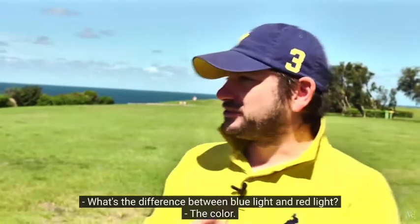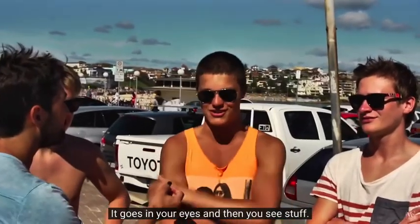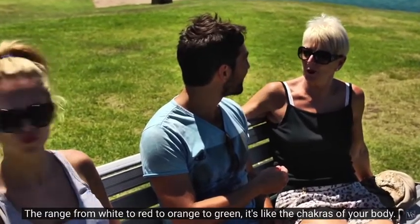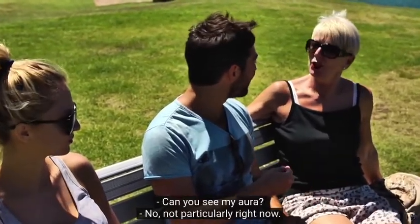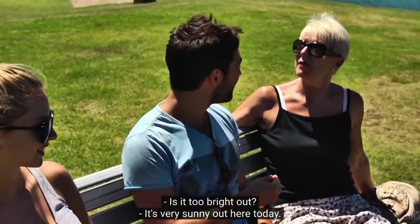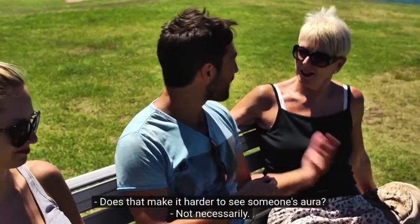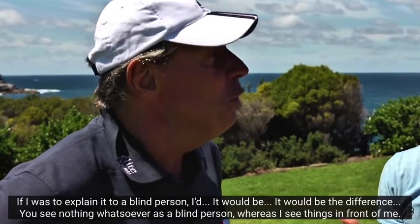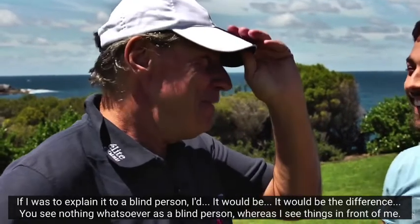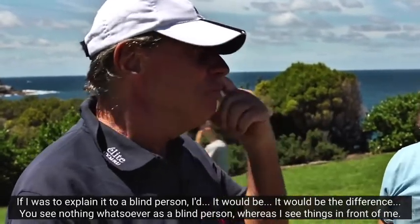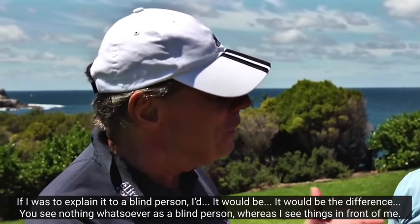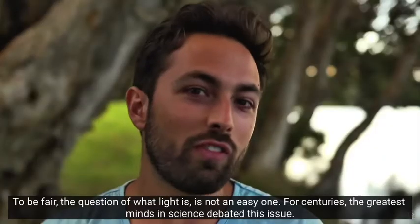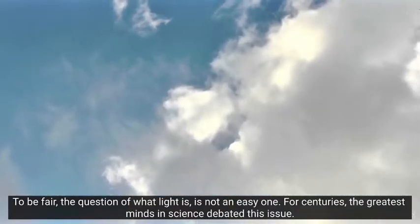What's the difference between blue light and red light? The colour. It goes in your eyes, and then you see stuff. They range from white to red to orange to green. It's like the chakras of your body. Can you see my aura? Not particularly right now. Is it too bright out? It's very sunny out here today. Does that make it harder to see someone's aura? Not necessarily. If I was to explain it to a blind person, it would be the difference. You see nothing whatsoever as a blind person, whereas I see things in front of me. To be fair, the question of what light is is not an easy one.